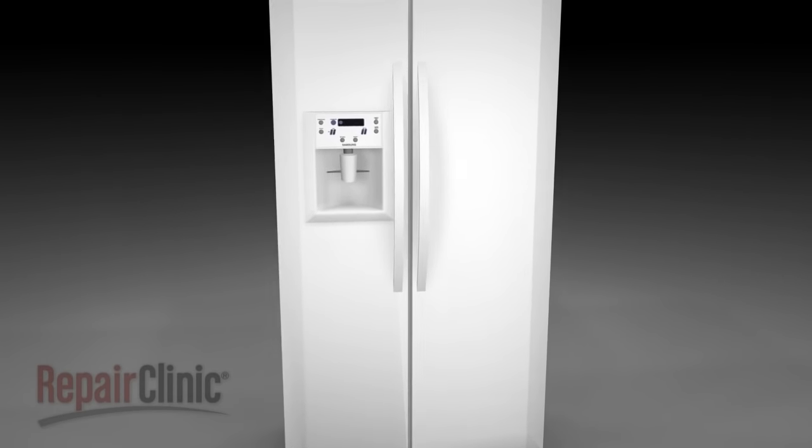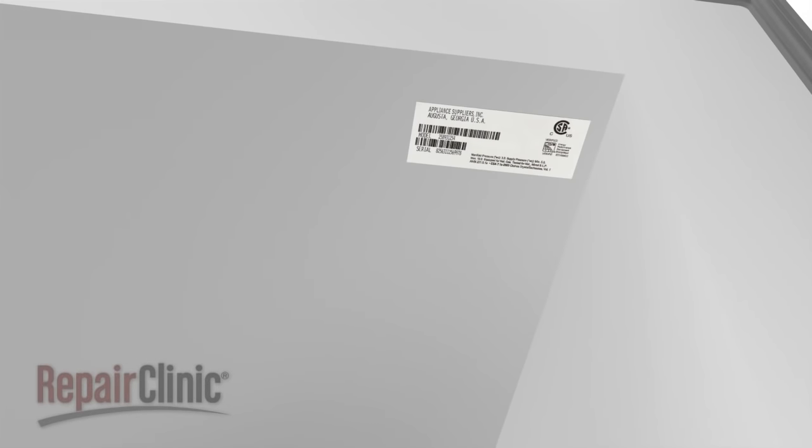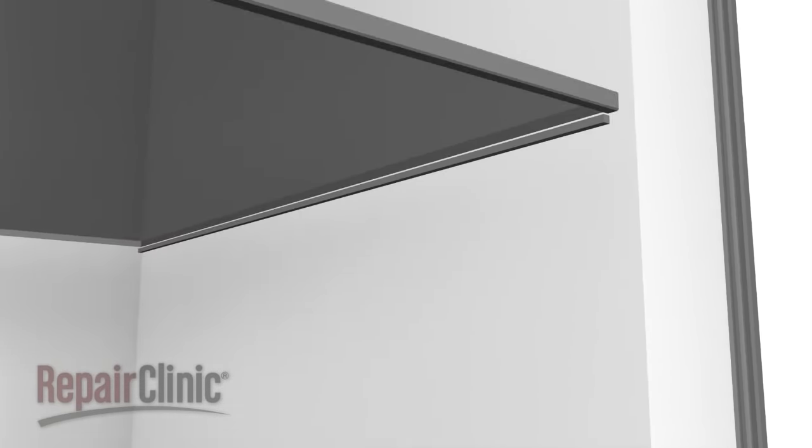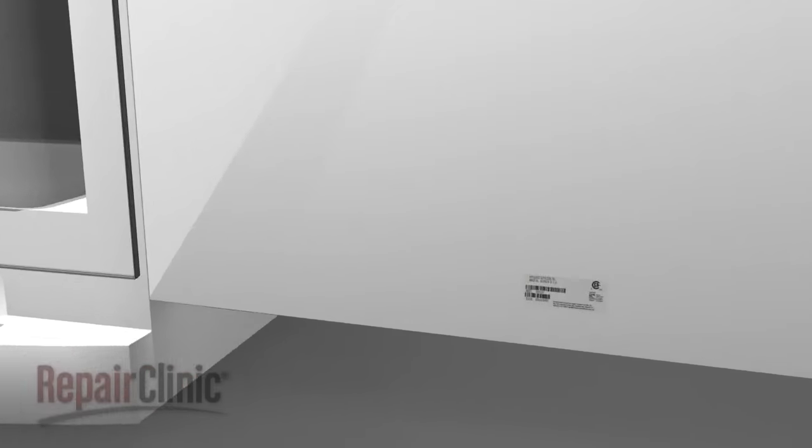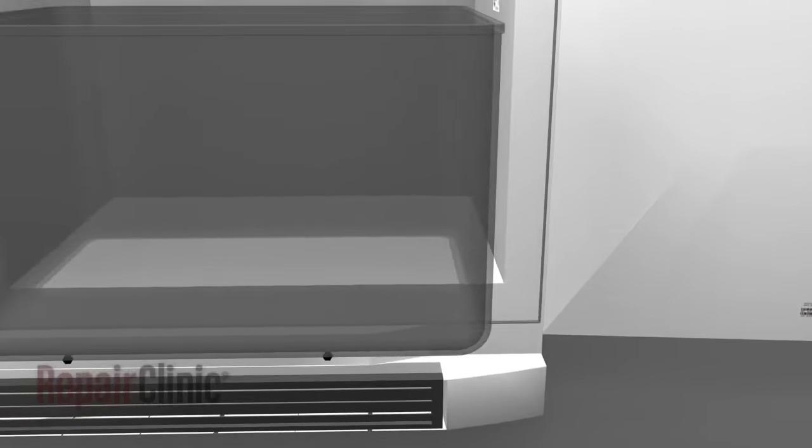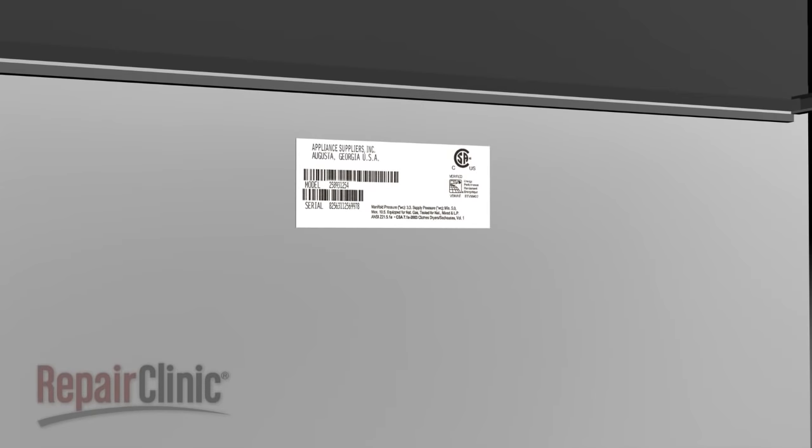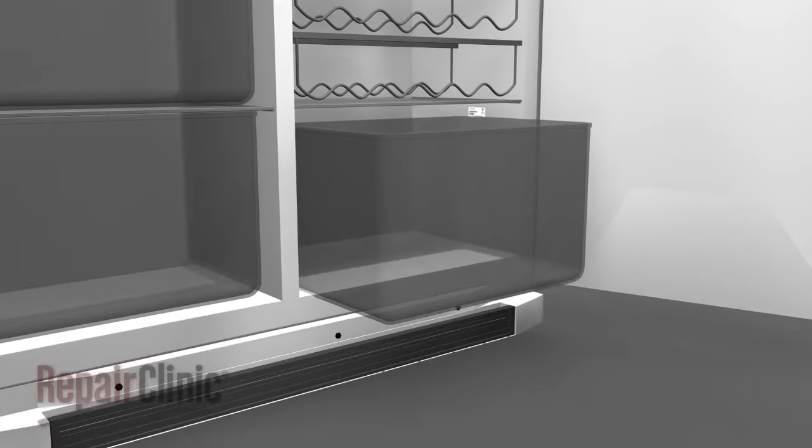For refrigerators, this label can often be found on the ceiling or the inside wall of either the refrigerator or the freezer, inside the door, on the wall behind the lower crisper drawer, or behind the kick plate.